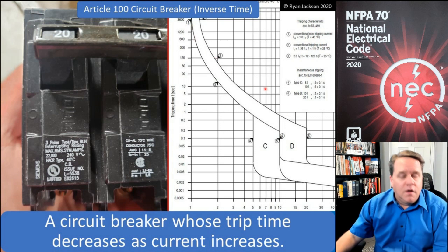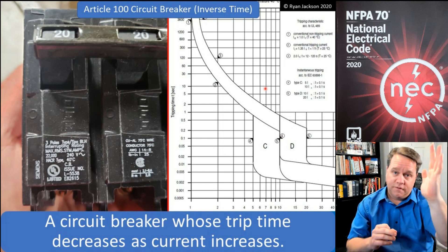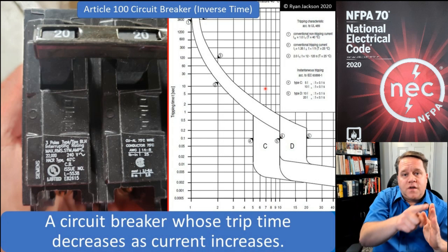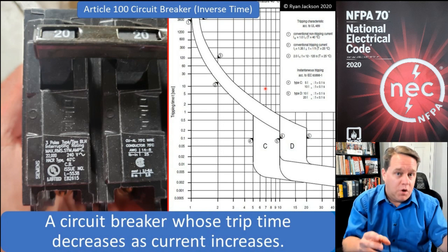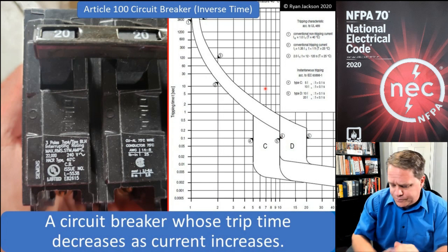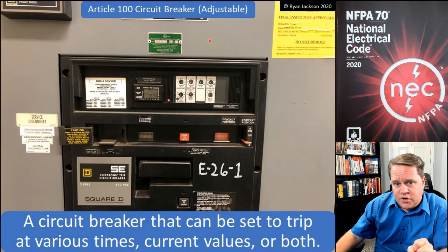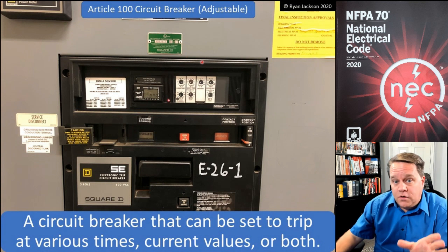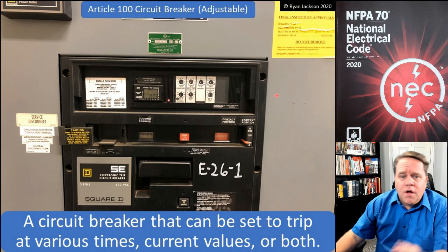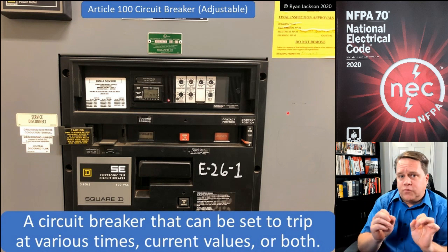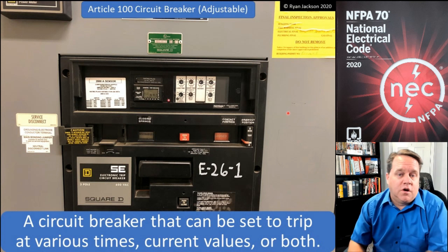With an adjustable trip circuit breaker, you manipulate what the time-current curve looks like. You set the long time pickup to the rating — that should hold indefinitely, completely vertical on the curve. Then we can set the pickup time, the ramp on how fast we want it to trip as it gets beyond that current, change the ground fault protection, and adjust all sorts of different settings. An adjustable trip circuit breaker lets us adjust both the trip points and trip times — we're adjusting the time-current curve.